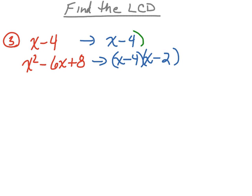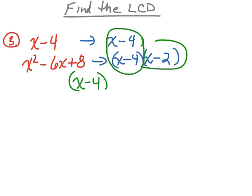You'll notice they do have some common factors — they share the x minus 4, so that's going to be part of my least common denominator. However, we also need to include this x minus 2 as part of the least common denominator as well. So both of these factors together make up my least common denominator.